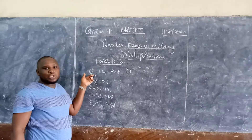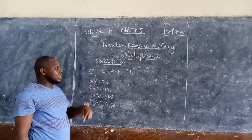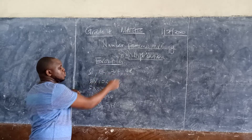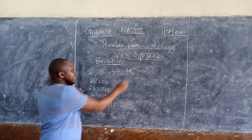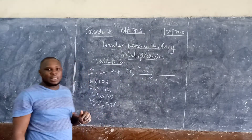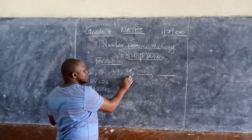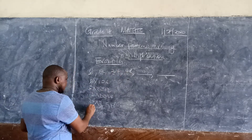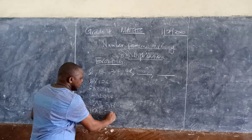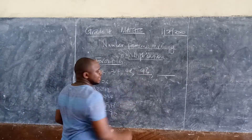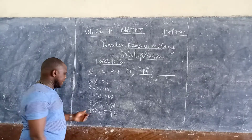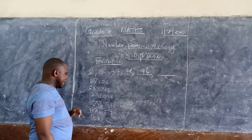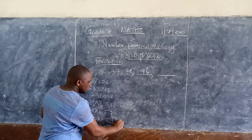Every number is multiplied by two for you to be able to get the next number. So six by two you get twelve, twelve by two twenty-four, twenty-four by two forty-eight. In our next, we can be able to determine the next two numbers. If each number is multiplied by two, meaning that if you get forty-eight multiplied by two, you get the next number, and this will give you ninety-six. From there, ninety-six is going to be multiplied by two to give you one hundred and ninety-two.